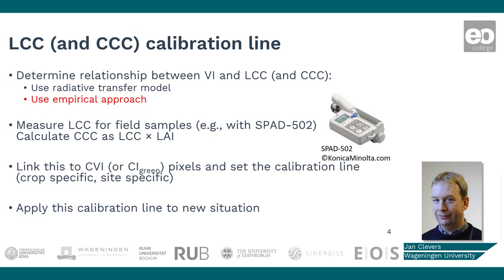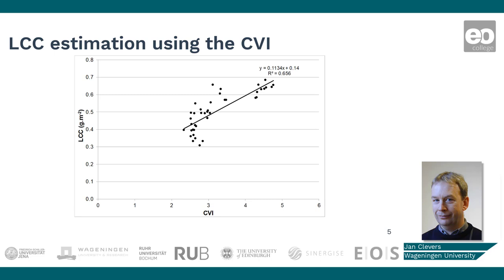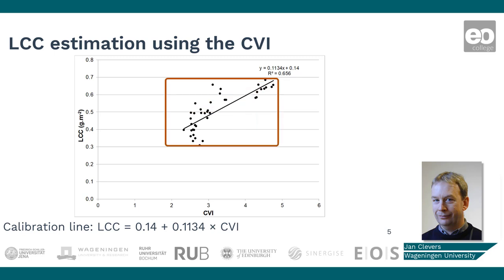Both calibration lines can now be applied to new Sentinel-2 images for the same crop and the same region without the need of additional field measurements. We see an example of the calibration line between CVI obtained from Sentinel-2 images and field measured LCC values for a potato field in the Netherlands. We find a linear relationship, in this case for LCC values in the range between 0.3 and 0.7 grams per square meter. However, this relationship is not as strong as the one for LEI, confirming that estimation of leaf chlorophyll content using remote sensing is more difficult than estimation of LEI.